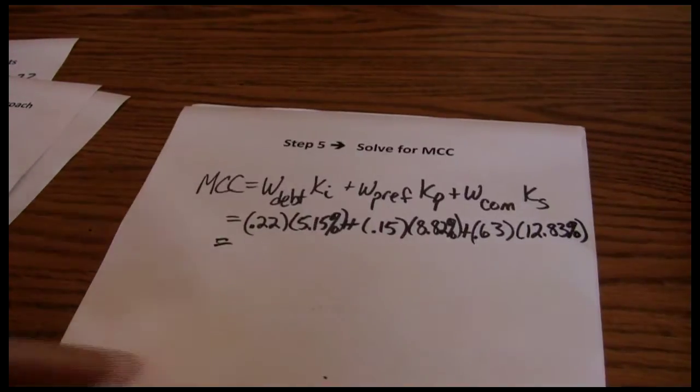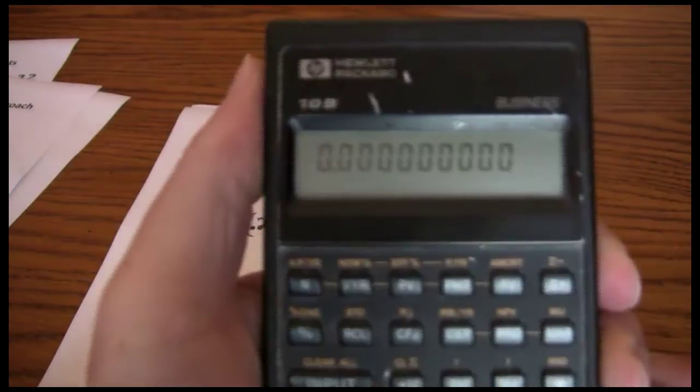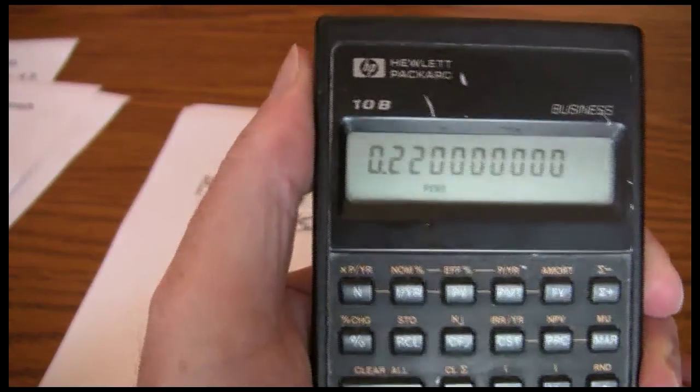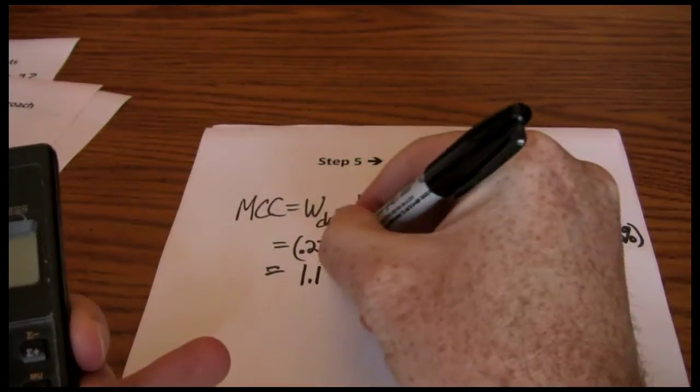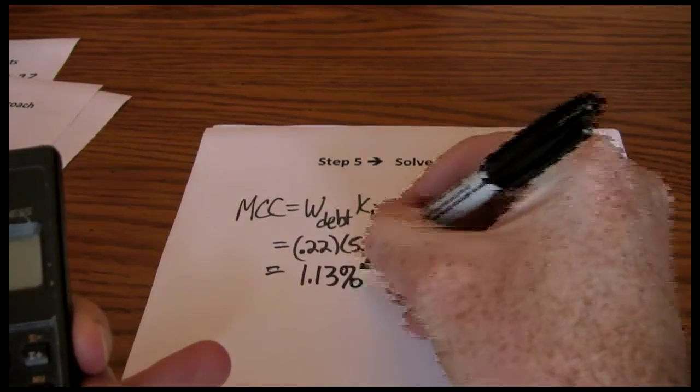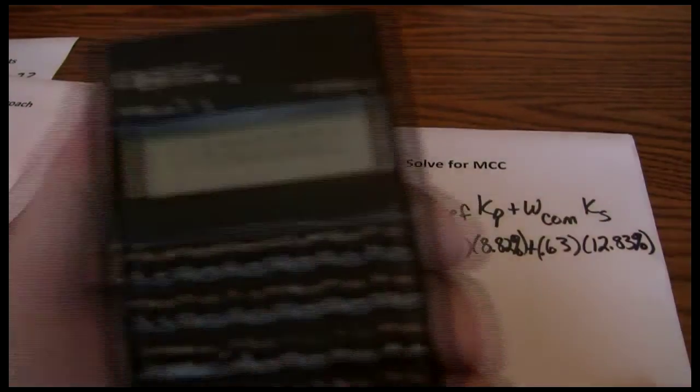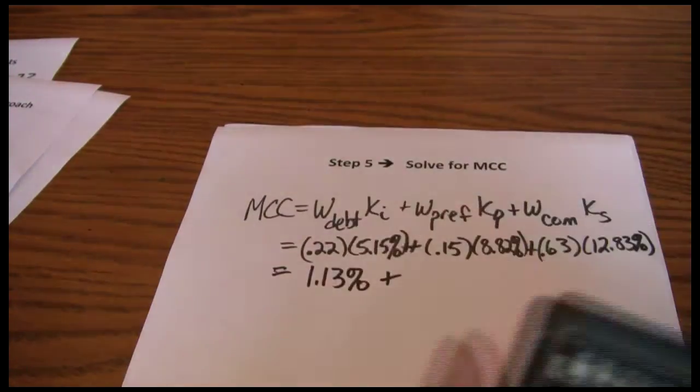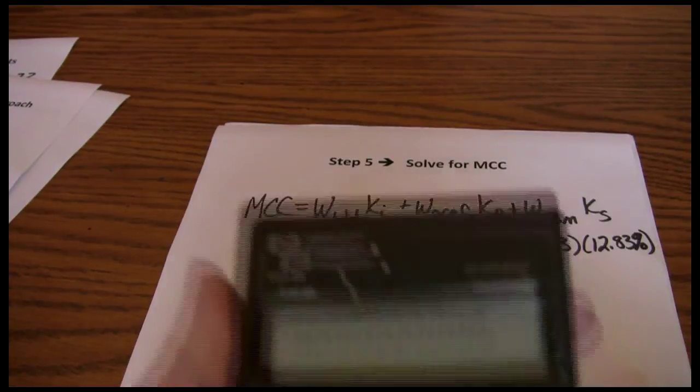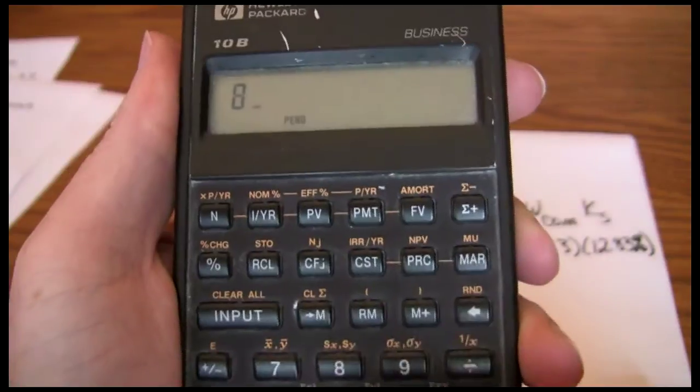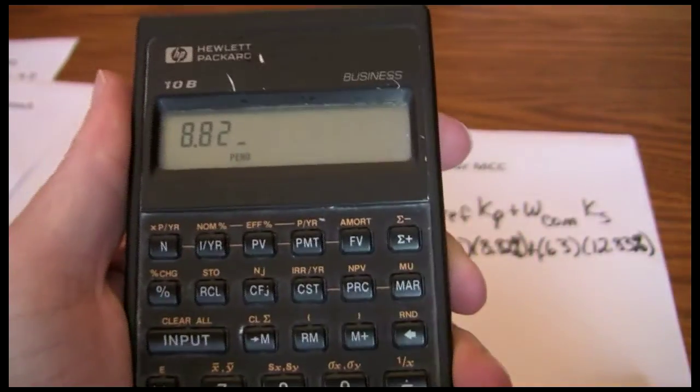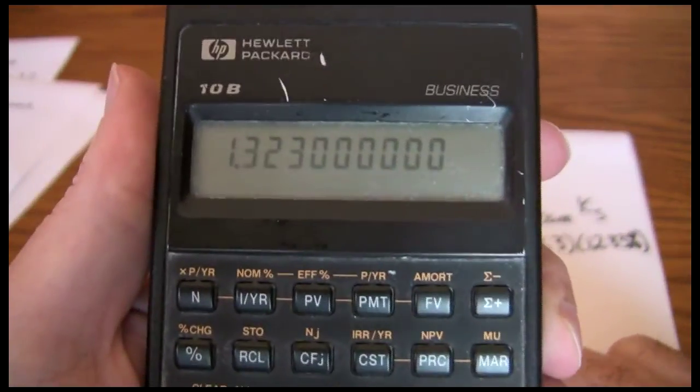Now the last thing we have to do is just work through the math. 0.22 times 5.15 gives us 1.13. 0.15 times 8.82 gives us 1.32.